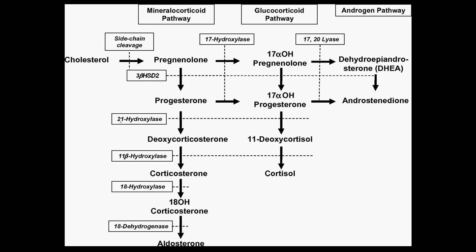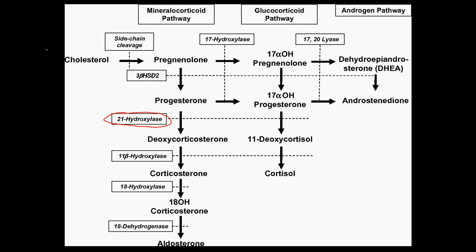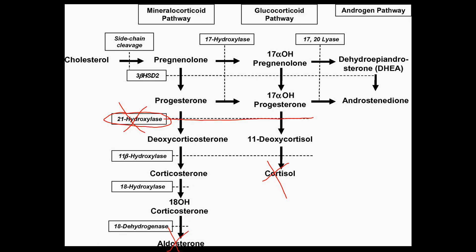I'm going to start first with 21-hydroxylase, because that is the most common cause of congenital adrenal hyperplasia — 95% of cases. Very, very high yield to know this enzyme and the aberrant effects it has. 21-hydroxylase is involved in the production of aldosterone as well as cortisol. So if we knock out 21-hydroxylase, this whole pathway stops — we're not going to get any cortisol and we're not going to get any aldosterone. As a result, all of the pregnenolone that was going to enter this pathway is going to be shunted over and overproduce the sex steroids.